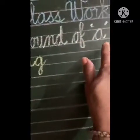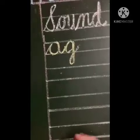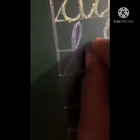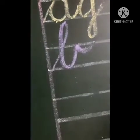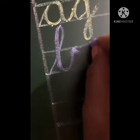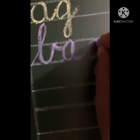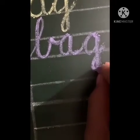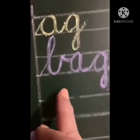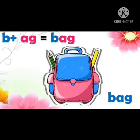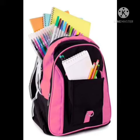Write down the heading: sound of 'a' and 'ag'. The first word in this family starts with 'b' — the 'buh' sound. Make 'b', extend the flake and make 'a', extend the flake and make 'g'. BAG. This is a school bag — we carry books and notebooks in the bag.